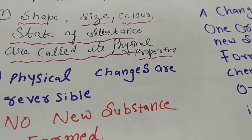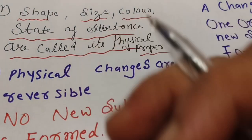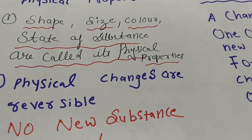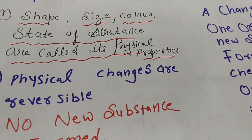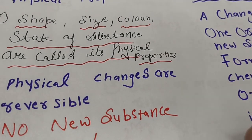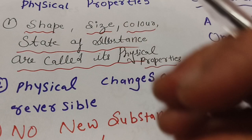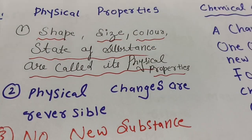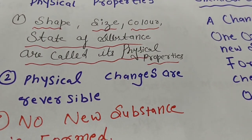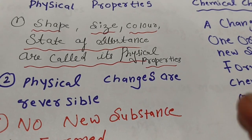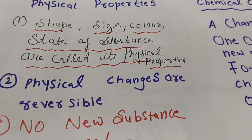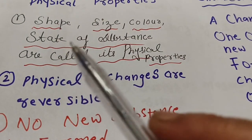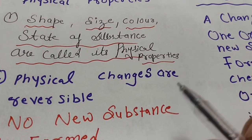So what are the physical properties of sugar? Sugar is white in color and is in a crystal form. When we talk about physical properties, we talk about shape — cube, square, powder — size, and color. All these are called physical properties.